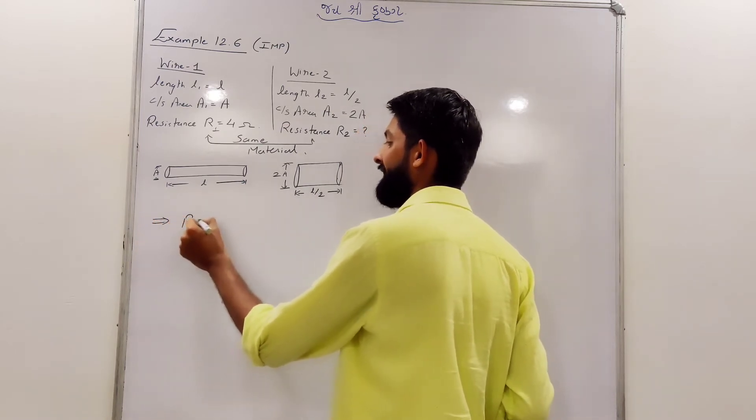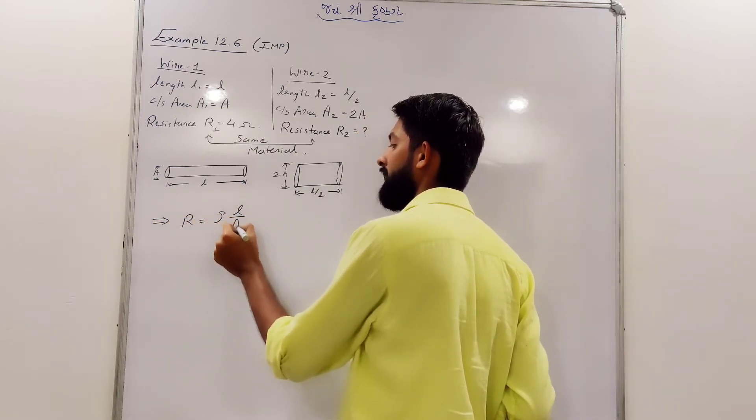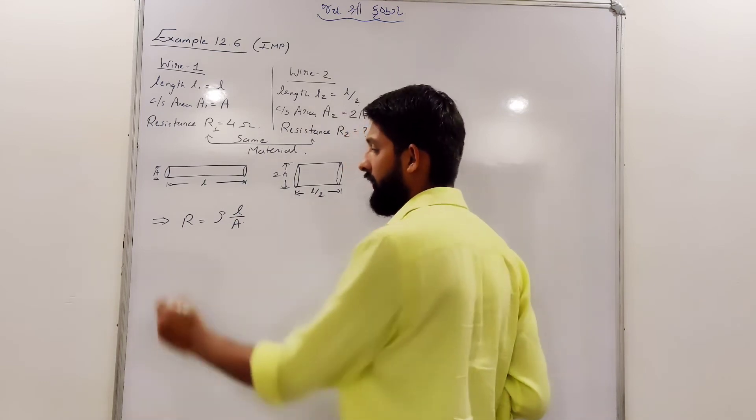So, you have a formula, R is equal to rho L upon A.